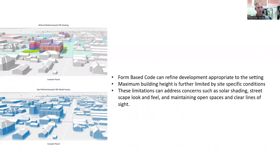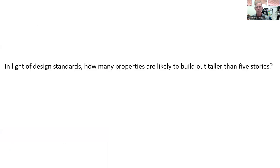To recap: form-based code can refine development standards so they're appropriate to the setting, and maximum building height can be further limited by these standards. Limitations imposed through these standards can address many concerns about larger stature buildings in our community. In light of these design standards, how many properties are likely to build out taller than five stories? I've seen commentary suggesting five, six, seven, eight-story buildings will appear throughout the entire Gateway area — that's just unrealistic. I want to address market factors driving those trends and look at how the standards we adopt into the form-based code can change how many sites would be subject to five stories.